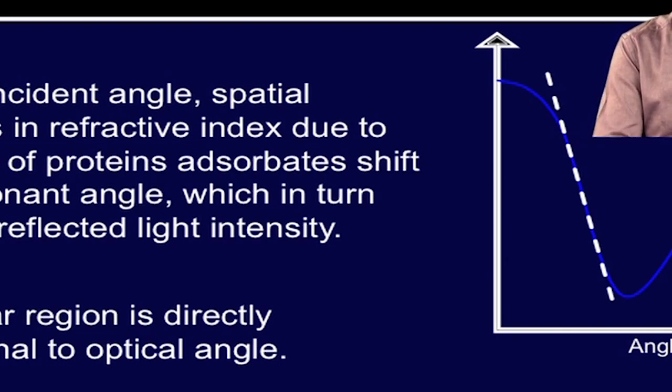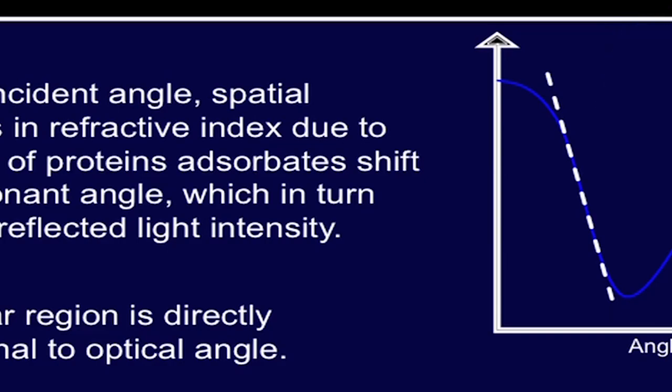This linear region, as shown in the graph, is directly proportional to the optical angle. This linear region of the SPRI curve quantitatively correlates the changes in refractive light intensity with the amount of material present on the surface. Therefore, in SPR imaging, as the term says, an image is generated. You can see in this slide, the image contrast is shown, and each of these circles is the spot printed on the surface of the gold chip.